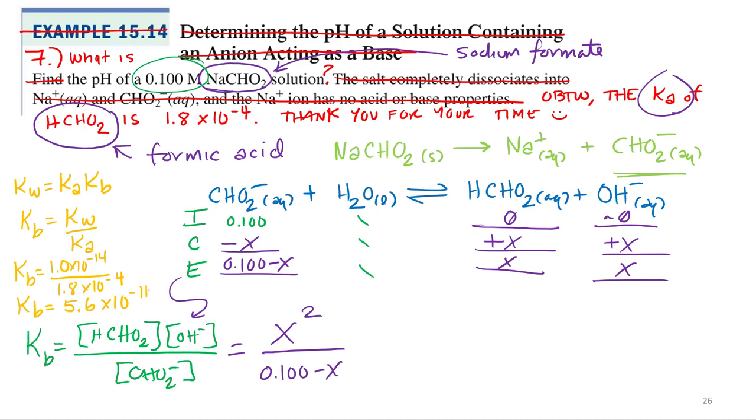So, Kb equals Kw over Ka. Kw is a constant. Ka was given to us. 1.8 times 10 to the negative 4. Not a lot of room, but I'll sneak it in there. So, what is 1.0 times 10 to the negative 14th divided by 1.8 times 10 to the negative 4th?